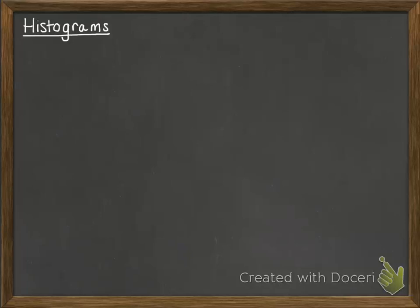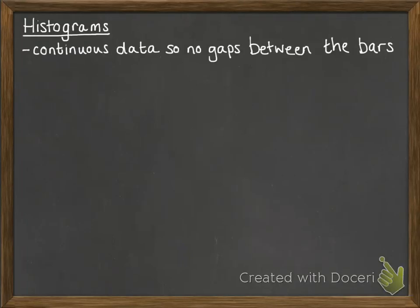Okay, histograms. Now histograms are used to represent continuous data. That means there's no gaps between the bars. That's different to a bar chart that was doing discrete data that had to have a gap between those bars.